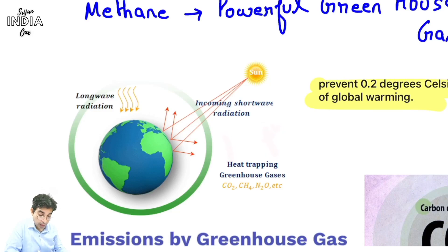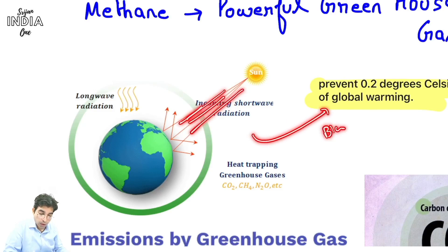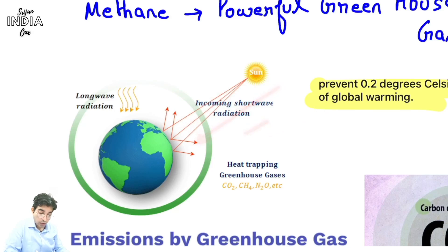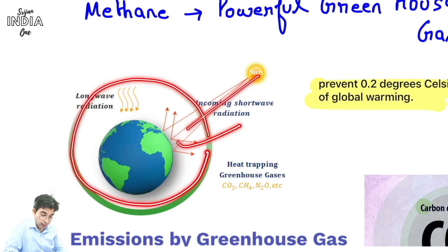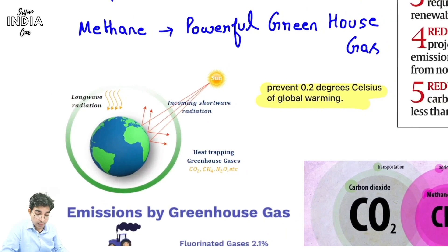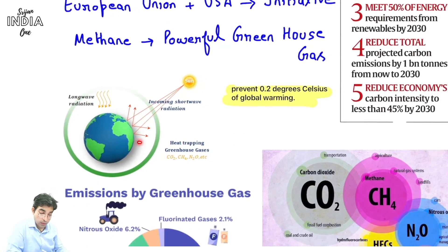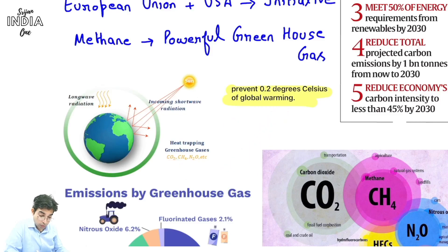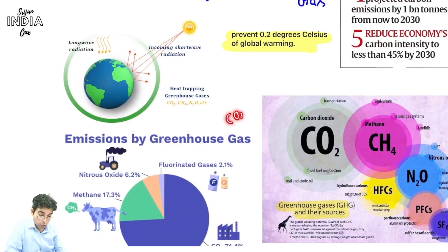Yeh greenhouse gases act as a filter - incoming short wave radiation ko to let through karti hain okay, but outgoing hota hai toh wo isko block kar deti hain. Incoming short wave radiation is okay, long wave outgoing radiation is not okay - block. Toh heat aa gayi but heat ja nahi pa rahi hai. Isse ek blanket atmosphere ka ban gaya Earth ke - atmosphere mein ek healthy amount of heat rehta hai aur usi ke kaaran life sustain ho payi Earth mein.